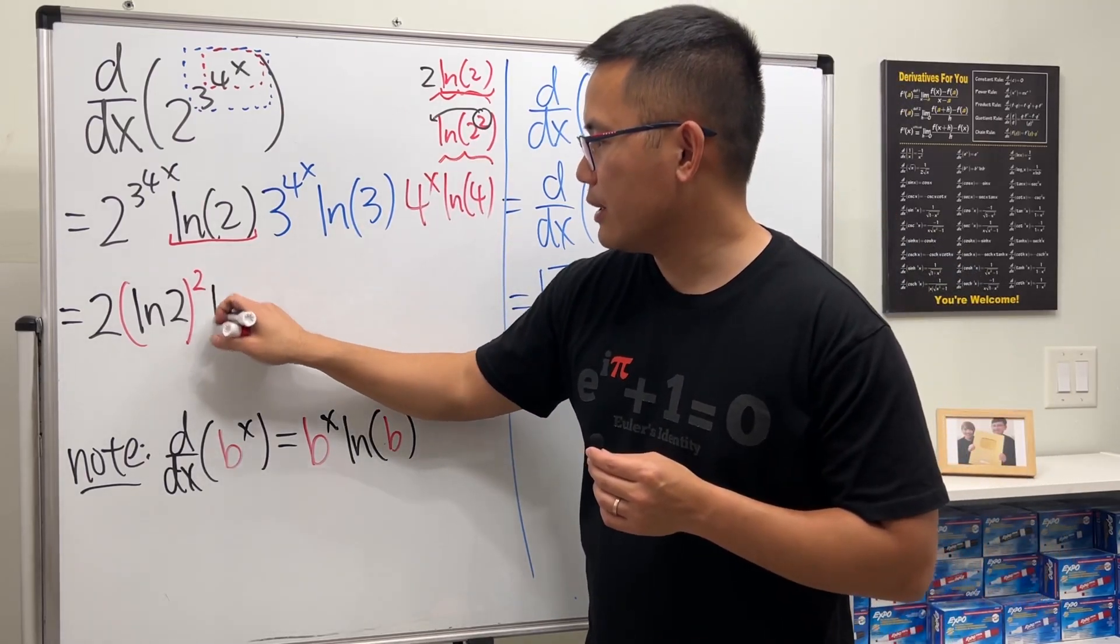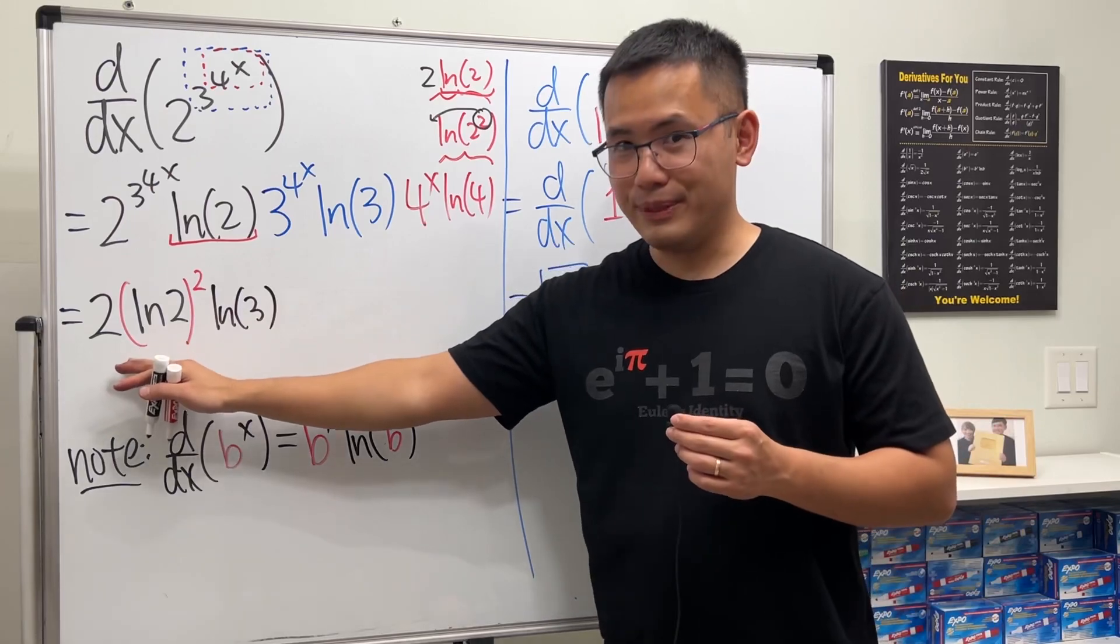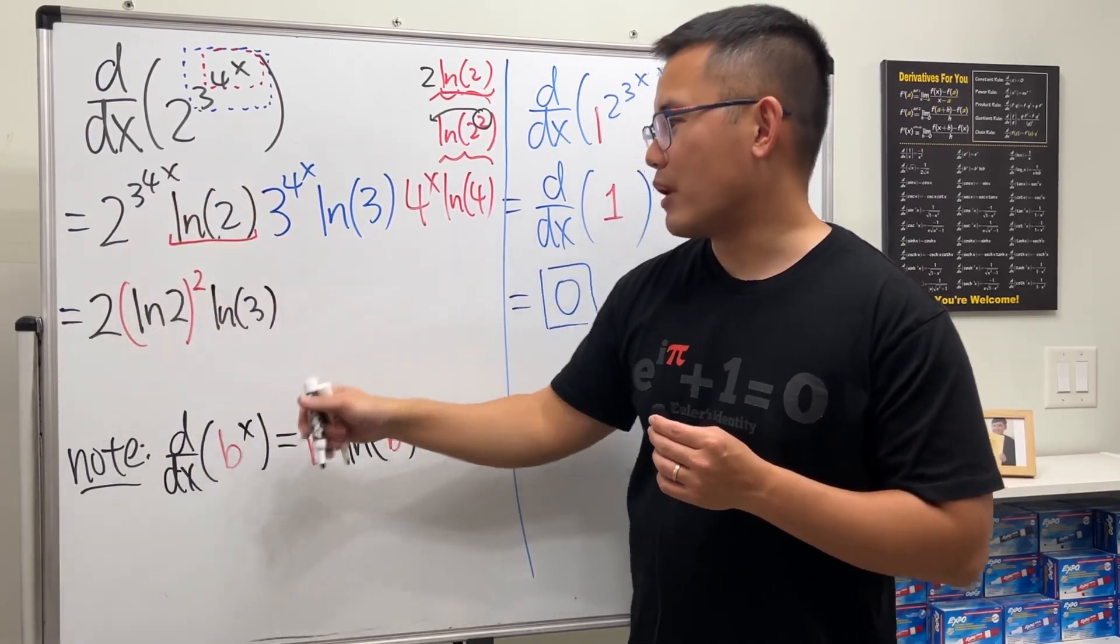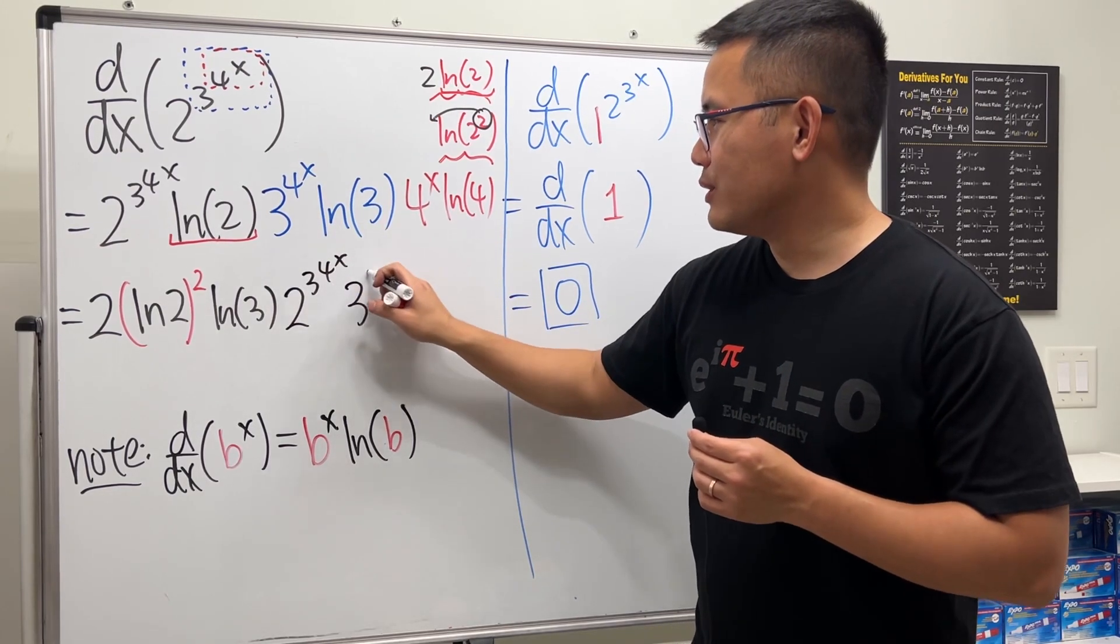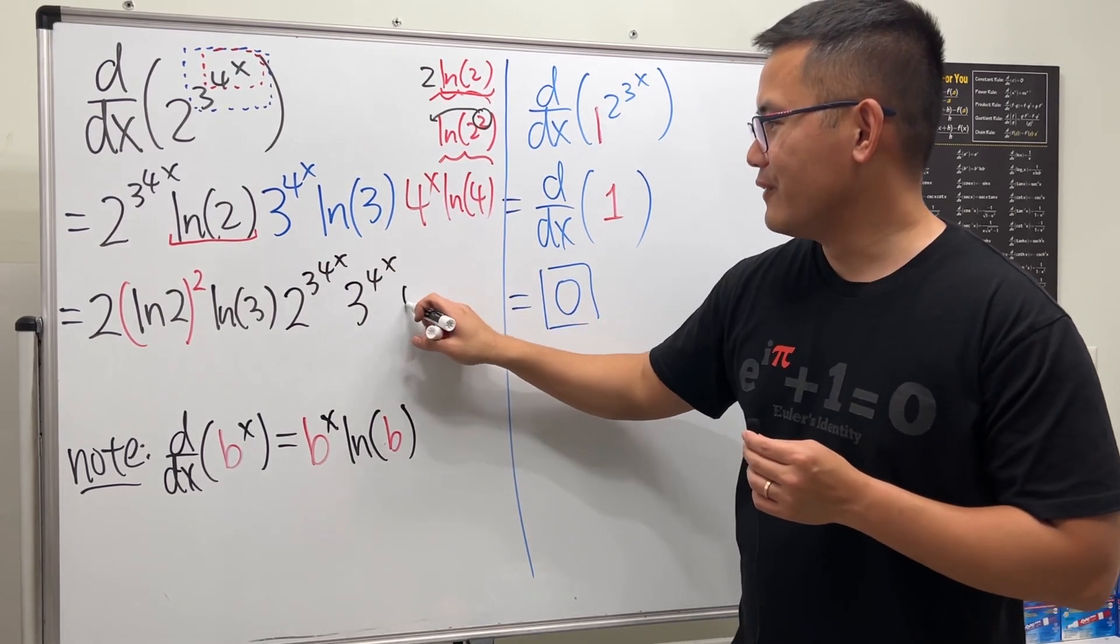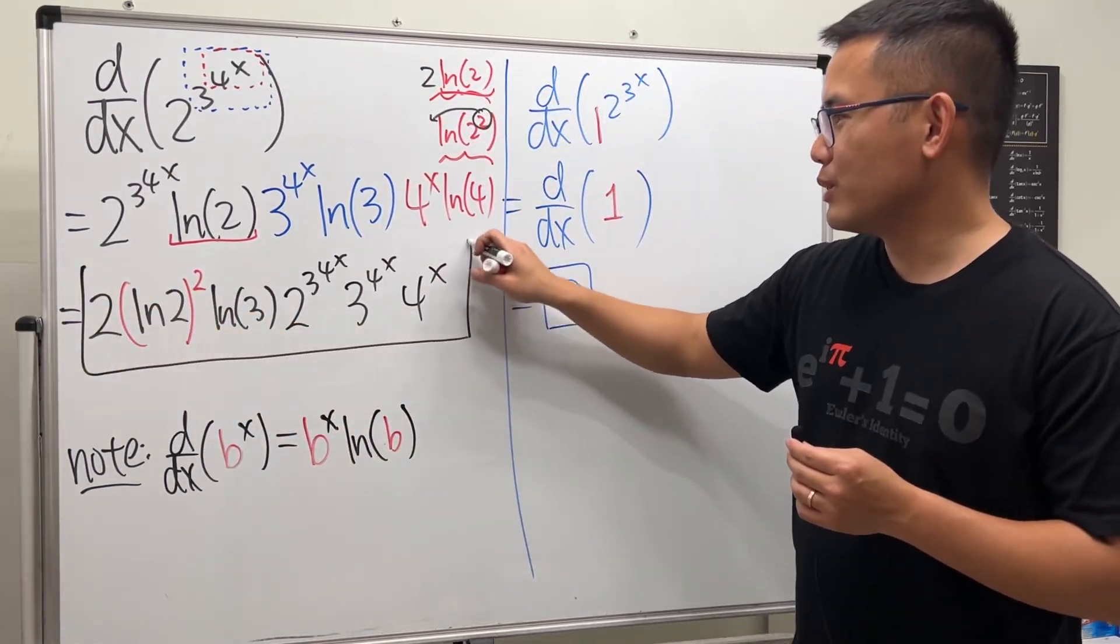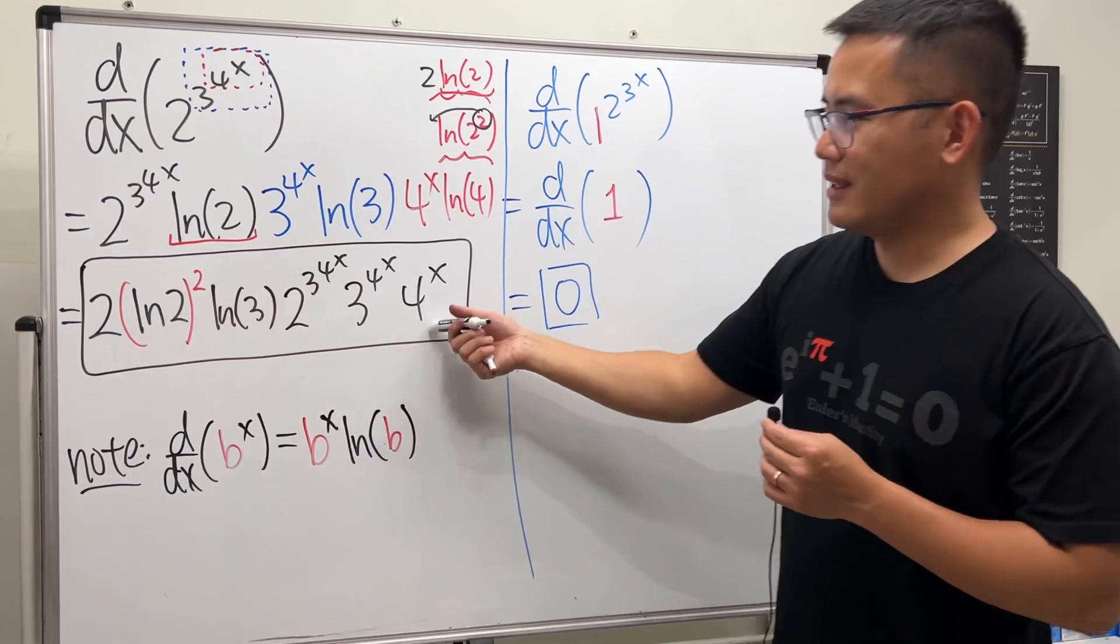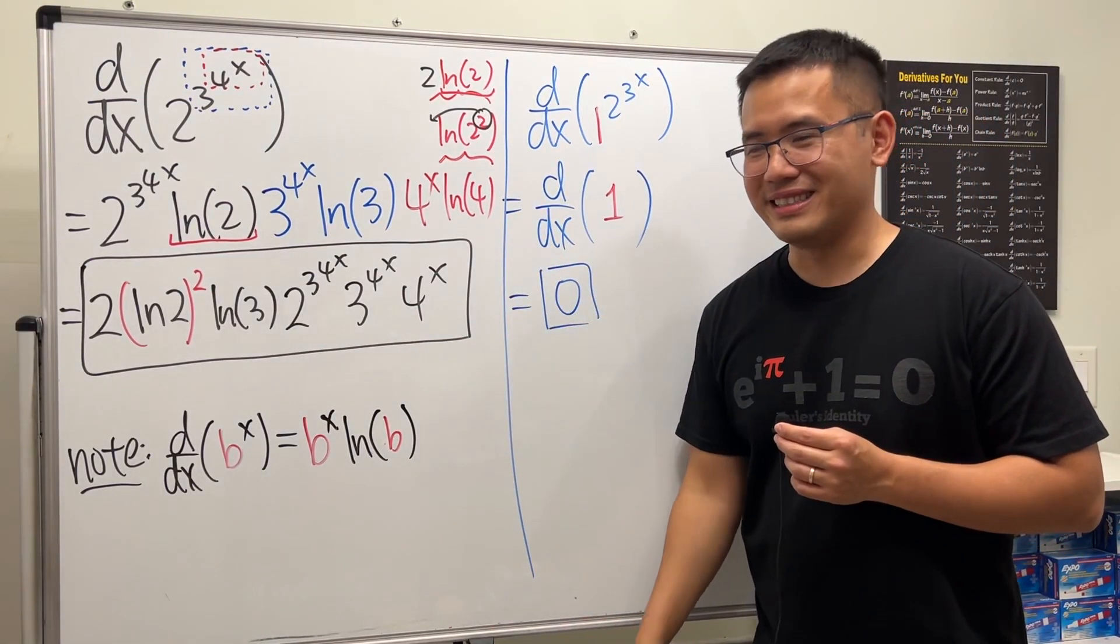Then of course we have that ln 3. So that's all the numbers. And then we have the function parts. We just write that down. So it's 2 to the 3 to the 4 to the x, and then 3 to the 4 to the x, and then lastly 4 to the x. I don't think there's any super nice way to simplify this. I think that's pretty much it. I think this is pretty cool. That's it.